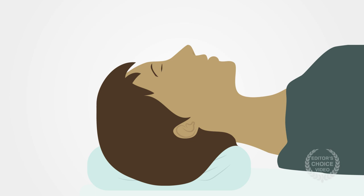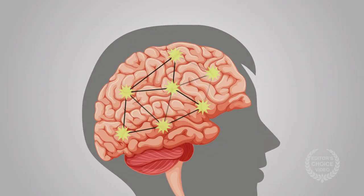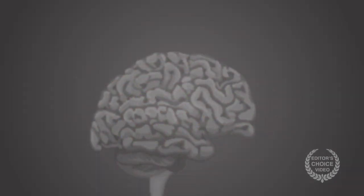When someone loses consciousness, one of the main things that happens is a loss of integrated activity across functionally separate brain networks. But there isn't a single way of measuring this that tracks with a degree of consciousness. That could soon change given the findings of a new article in the journal Anesthesiology.